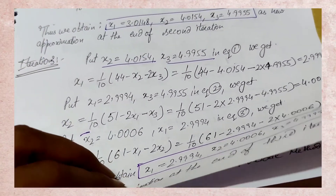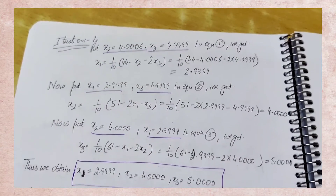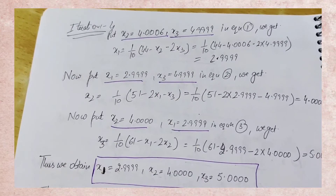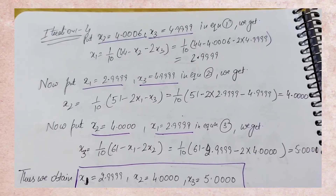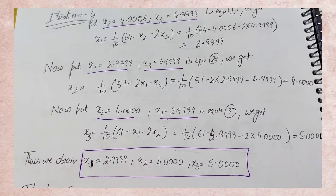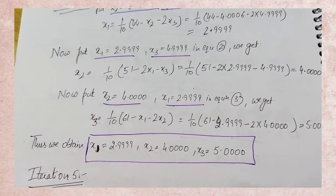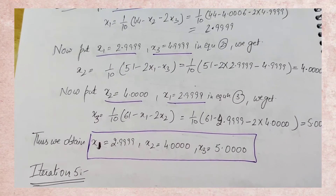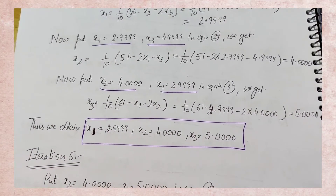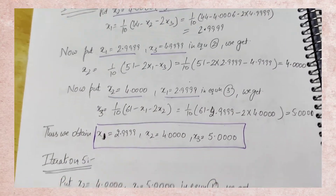Now we run iteration 4 to check if it matches iteration 3. Take iteration 3's values: x2 = 4.006, x3 = 4.9999. Put into x1's equation — you get x1 = 2.9999. Then use new x1 = 2.9999 and old x3, put into x2's equation — get new x2. Then use both to get new x3. The values at the end involve digits like 4.4×10⁻⁵ or 5.4×10⁻⁵ — since we're checking 4 significant digits, we cannot ignore these yet and must carry them forward.